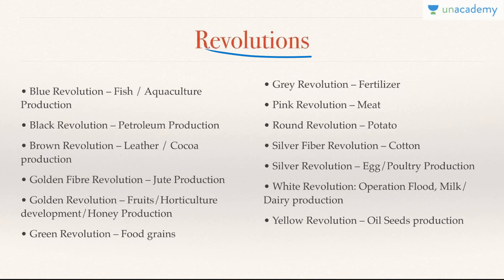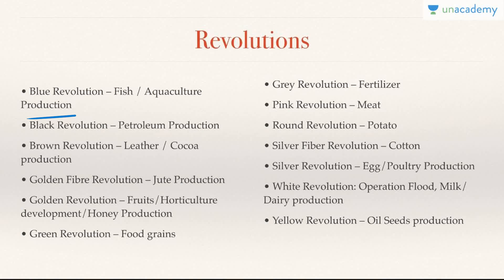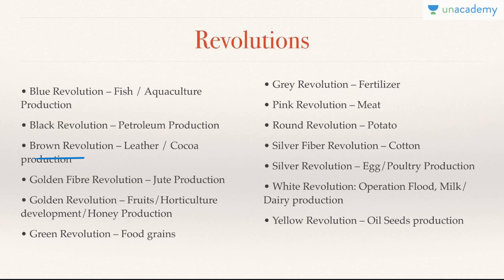When we talk about revolutions, the first thing is blue revolution is related to fish and aquaculture — very easy since blue is the color of water. Black revolution is related to petroleum production, easy to relate because petrol is black. Brown revolution relates to both leather and cocoa, and golden fiber — jute is known as the golden fiber.